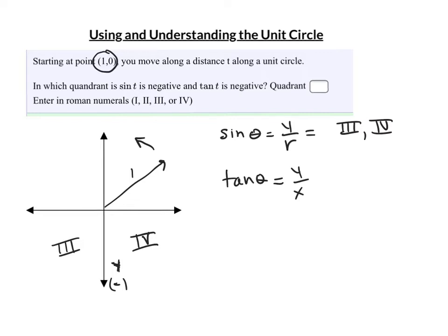In quadrant 2, y is positive but x is negative — so tangent is negative in quadrant 2. In quadrant 4, x is positive but y is negative — so tangent is negative in quadrant 4. So to answer the question, in which quadrant is sine negative AND tangent negative, the only quadrant that meets both conditions is quadrant 4.